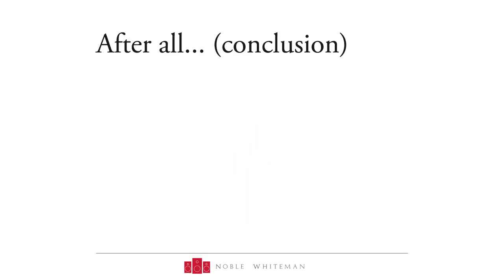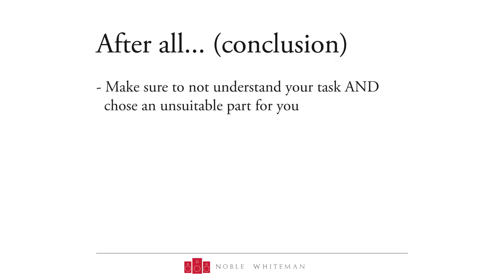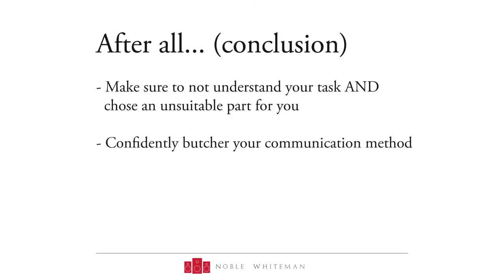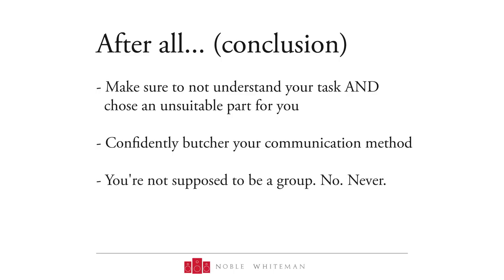After all, our three fancy females managed to screw themselves big time. With absolutely no comprehension about their task and what part they should choose, they stabbed themselves in the back by butchering their communication method, and at the end they even ignored the fact that they're a group. And therefore, Nora turned into a mad missy, Tanisha into a touchy termagant, and Kathy still is a lazy, careless cow.